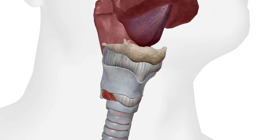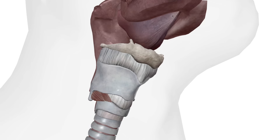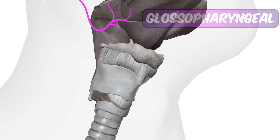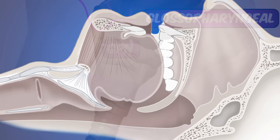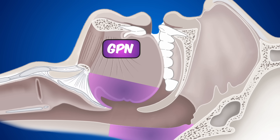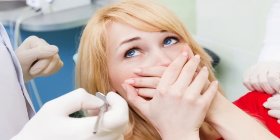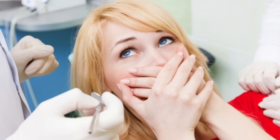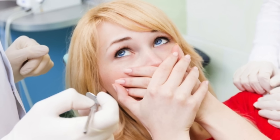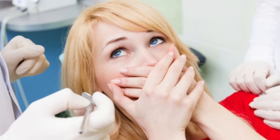The airway is innervated by three principal nerves. The aptly named glossopharyngeal nerve innervates the tongue, or glossus, and the pharyngeal walls. It also takes care of the posterior third of the tongue, the vallecula, and the anterior surface of the epiglottis. This is the nerve responsible for the gag reflex, which can make or break your awake intubation.